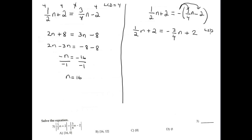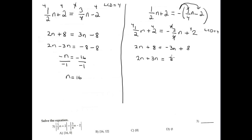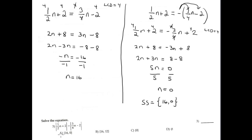Again, the LCD is 4, so multiply the whole equation by 4. This gives 2m plus 8 equals negative three m — canceling fours — plus 8. Moving terms: 2m plus 3m equals negative 8 plus 8, so 5m equals zero. Dividing by 5, m equals zero. The solution set is {16, 0}, corresponding with option A.